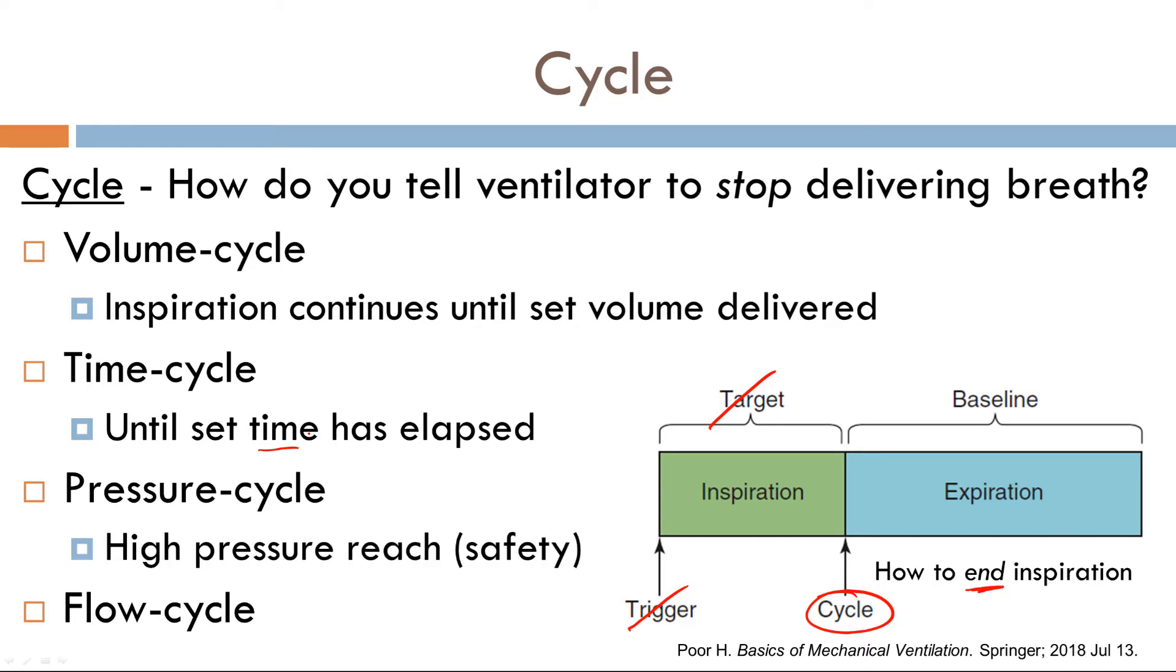What about pressure cycle? In pressure cycle, you set a pressure cycle, which is usually a backup safety mechanism. Once the pressure exceeds 60 centimeters of water, boom, stops delivering a breath. Why continue to deliver a breath if the pressure is exceeding so high above 60? So as a safety mechanism, you use that to save yourself from possible barotrauma.